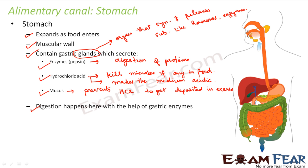So digestion happens in the stomach with the help of gastric enzymes. To recap: ingestion happened at the mouth, then in the buccal cavity teeth broke the food into smaller sizes and salivary amylase converted starch into simple sugar. The food passed through the pharynx and esophagus to reach the stomach, where digestion started with gastric enzymes like pepsin. Hydrochloric acid made the medium acidic for pepsin to act, and mucus prevented excess acid accumulation.